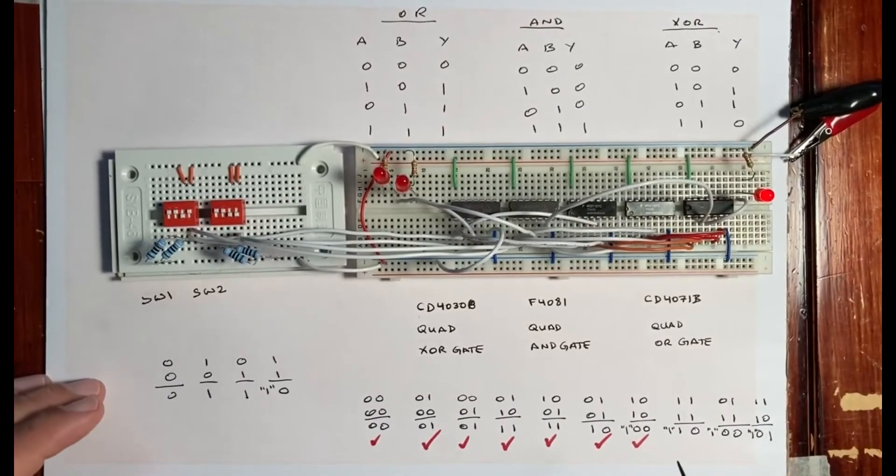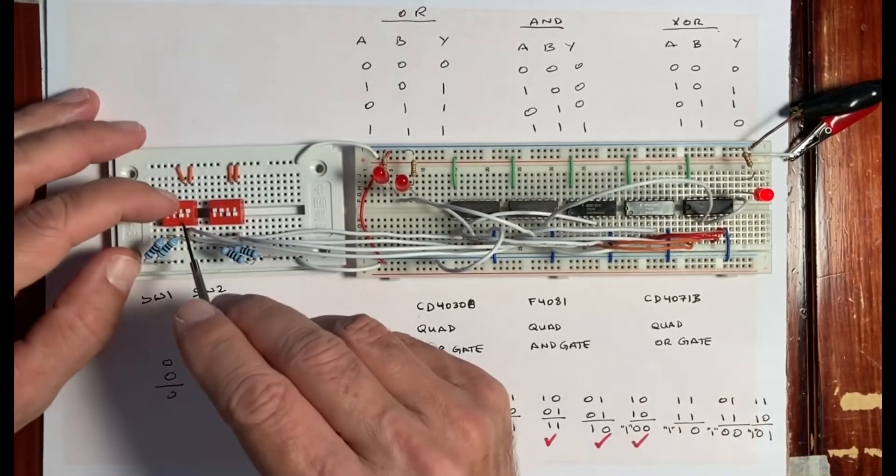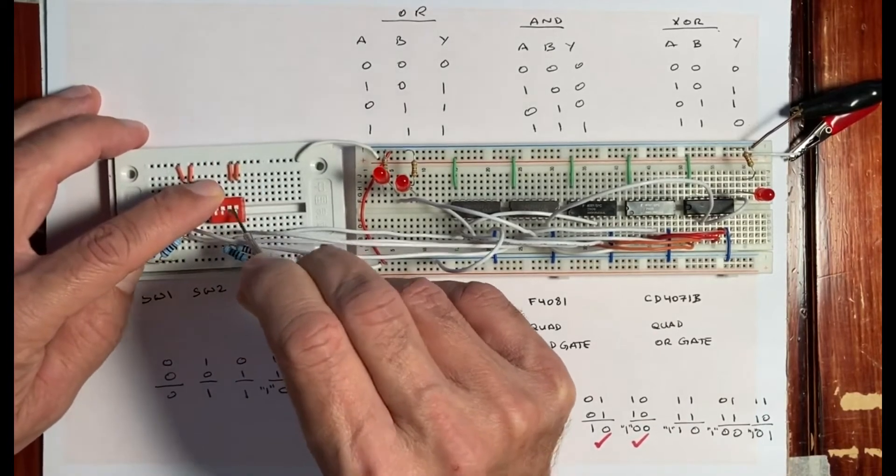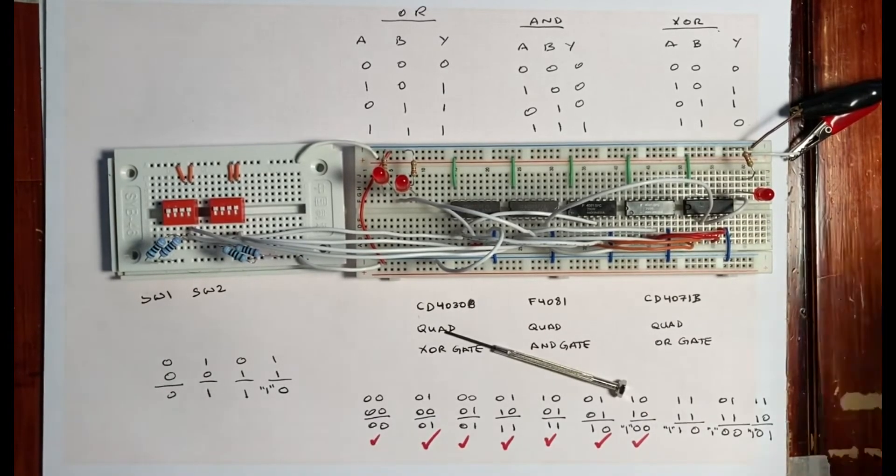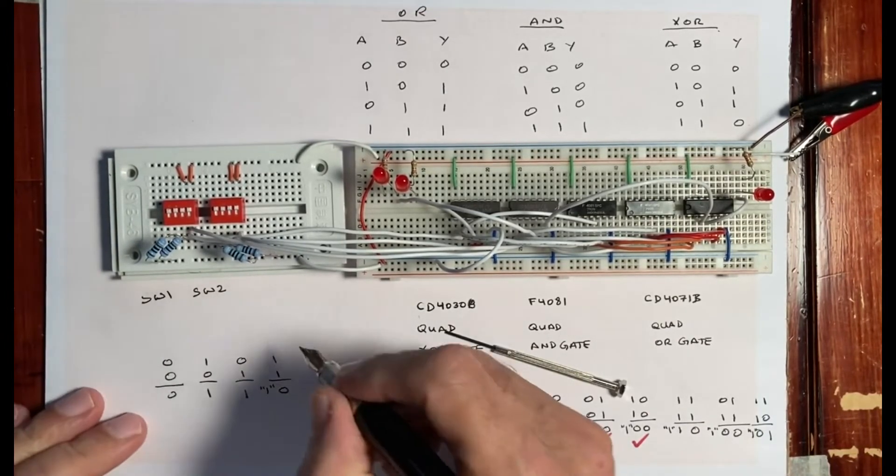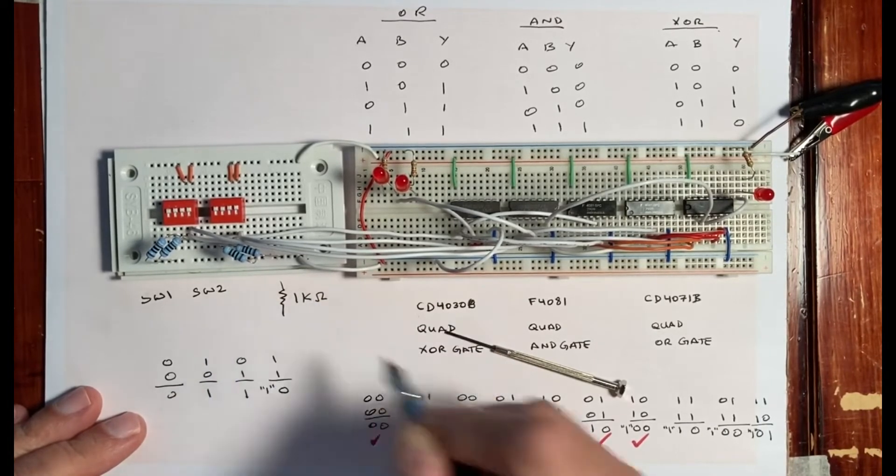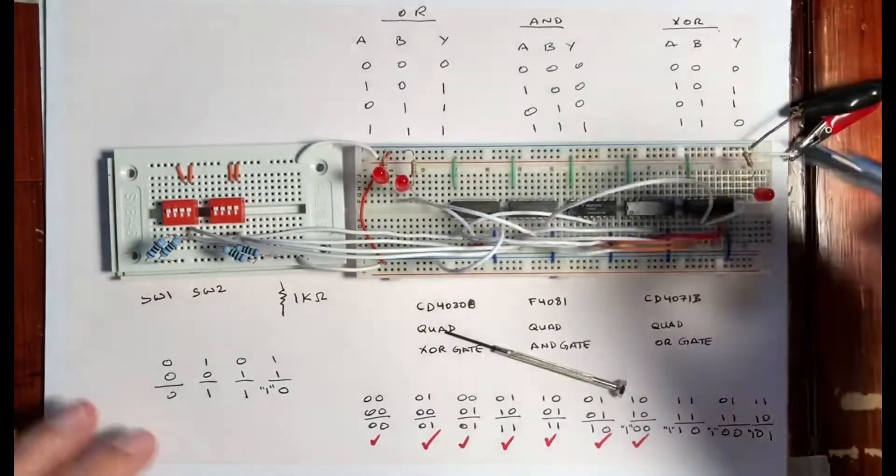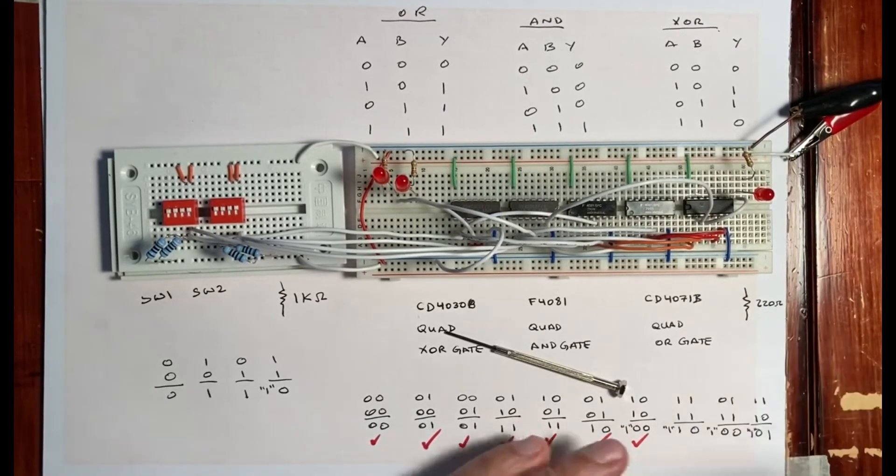Before going on to the next step, I'm going to see the role of these resistors, see if they affect anything in particular. Let's do our calculations one more time. Everything is working right now with the resistors. By the way, these are 220 ohm resistors and this is a 1k resistor.